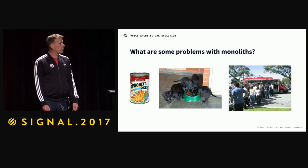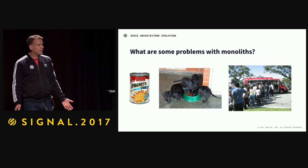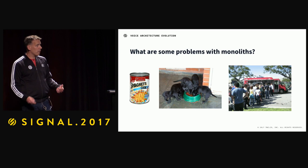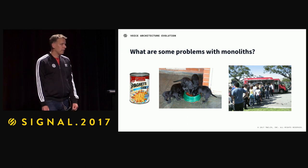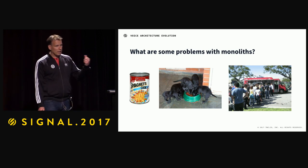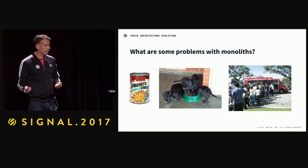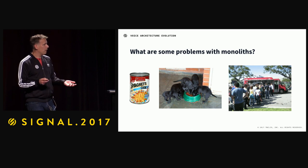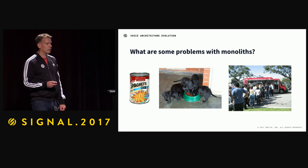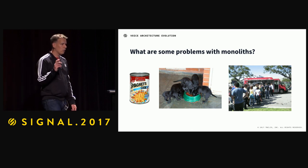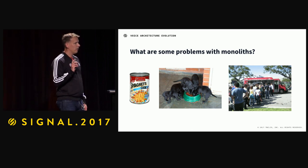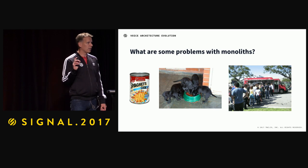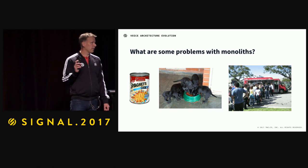A monolith can also be very hard to scale, or it may scale unevenly — scaling for one concern but not for another. And it can be very hard to isolate what the actual problem is when something goes wrong.